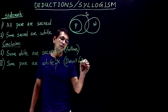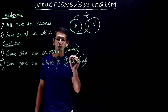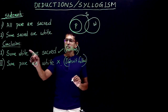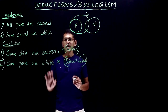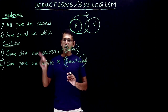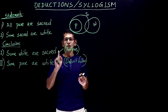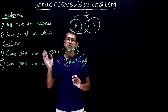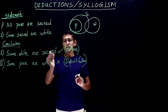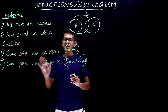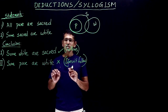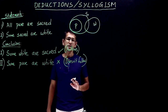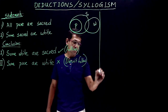This is what you have to check from an exam point of view — does it really follow or not? Usually the answer choices are: mark A if only conclusion 1 follows, mark B if only conclusion 2 follows, mark C if both conclusions follow, and mark D if neither conclusion follows.